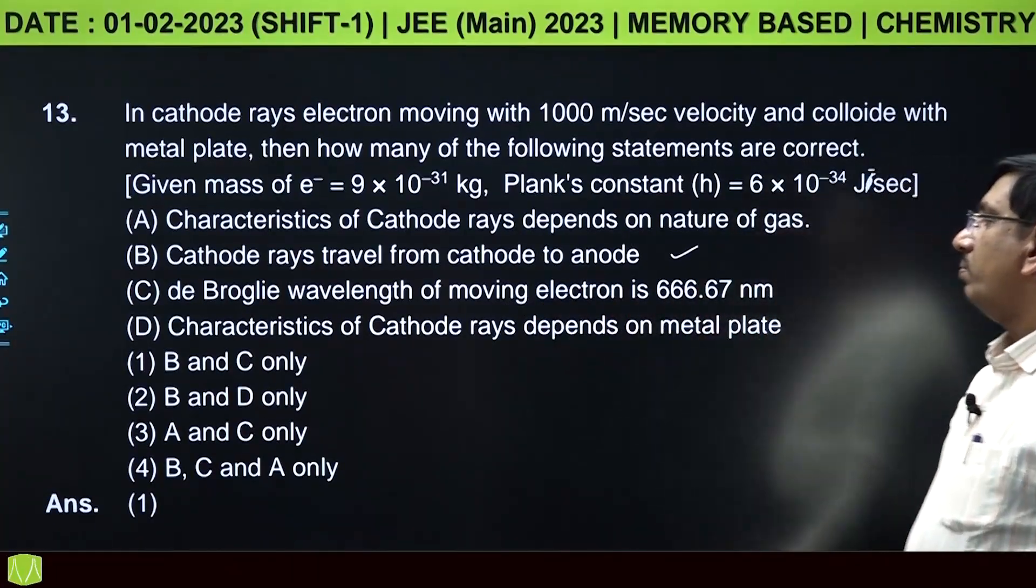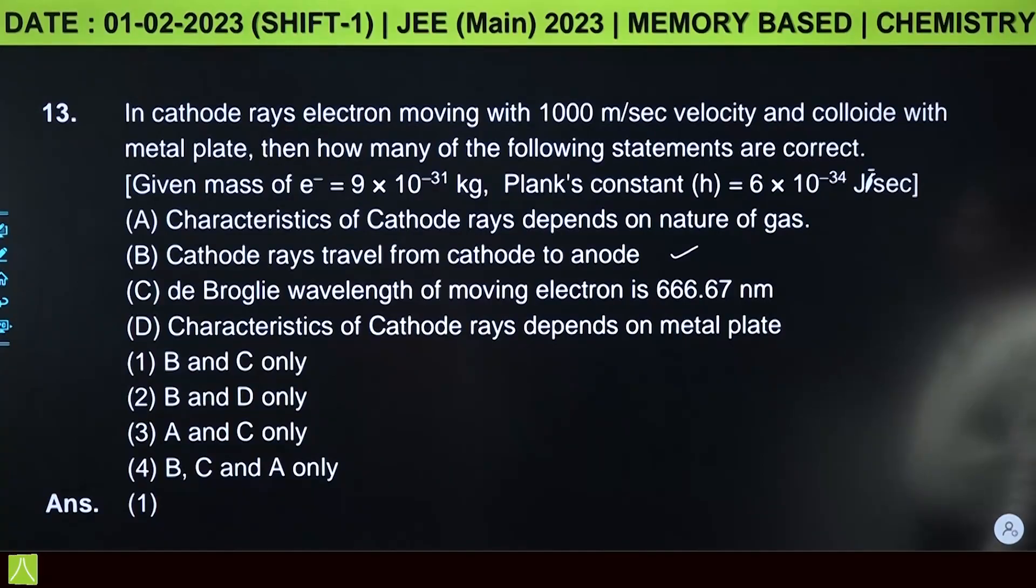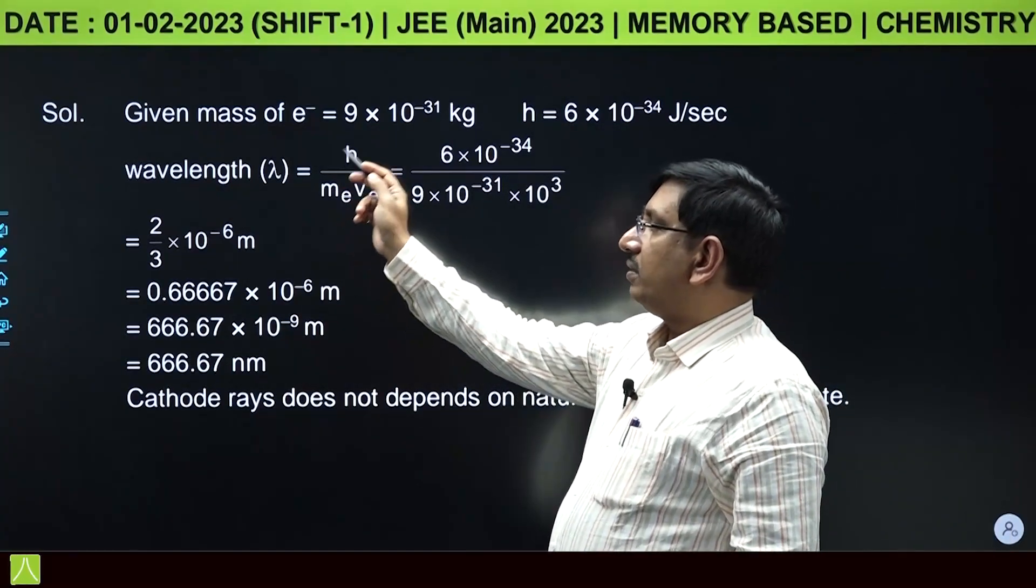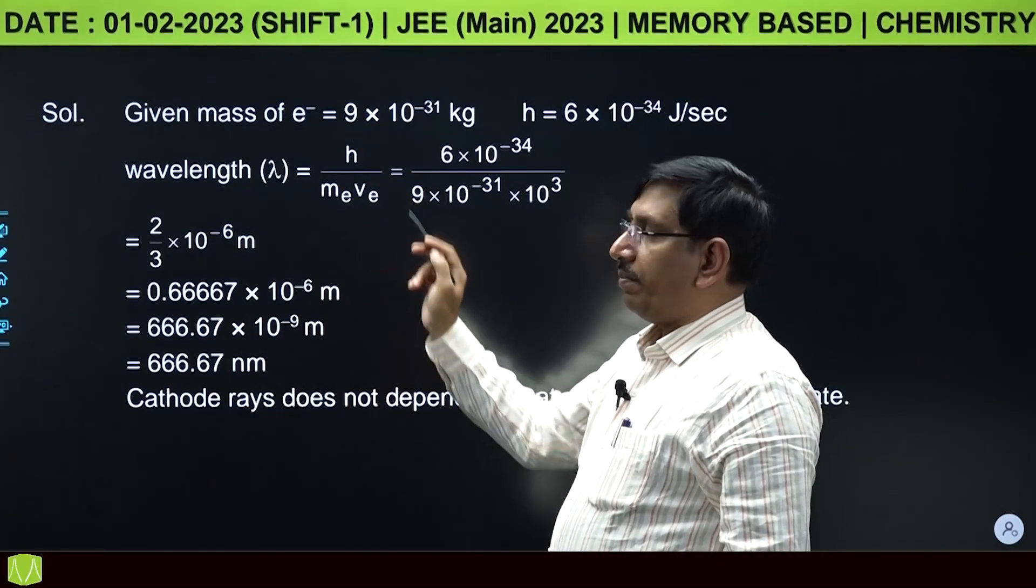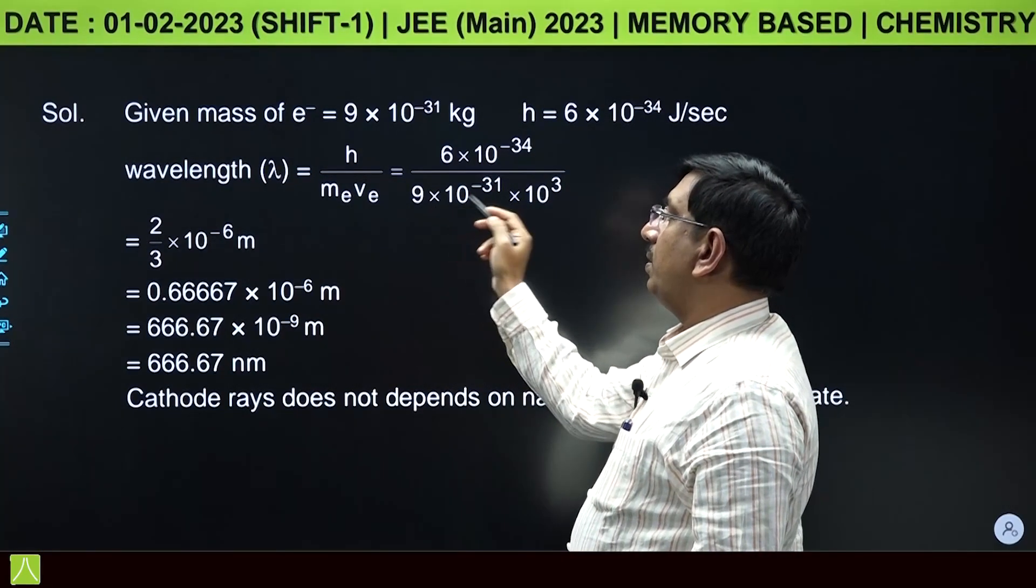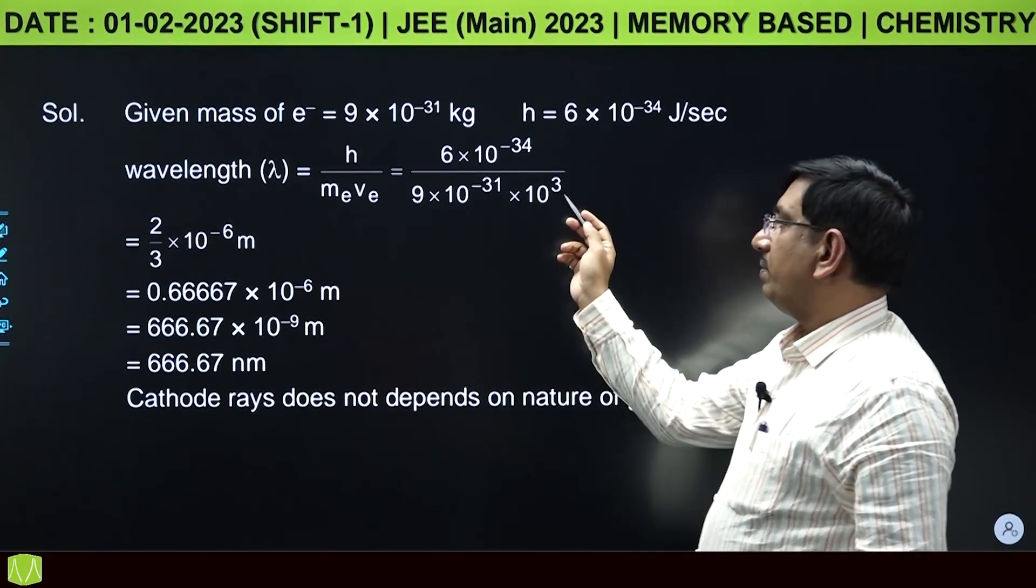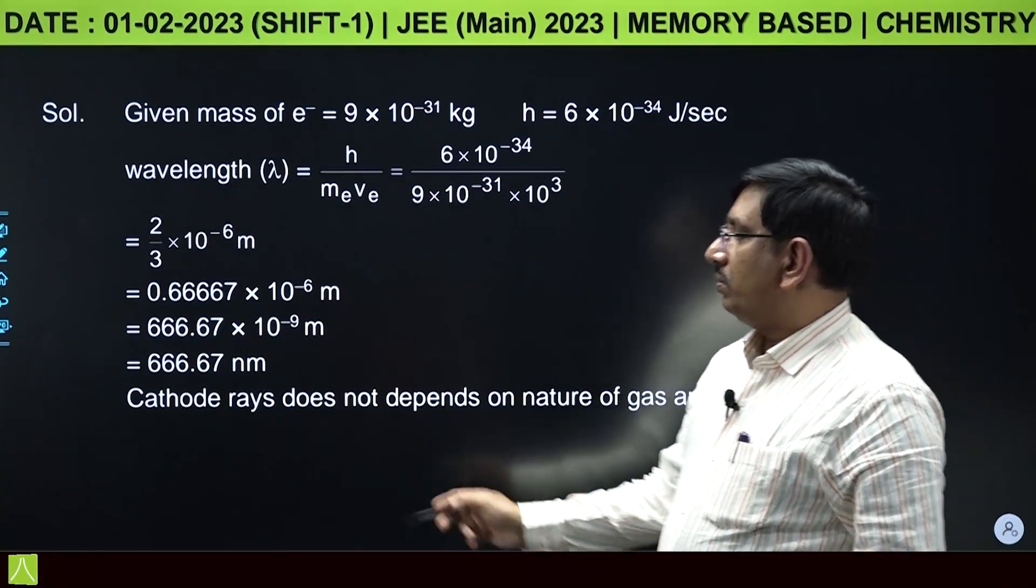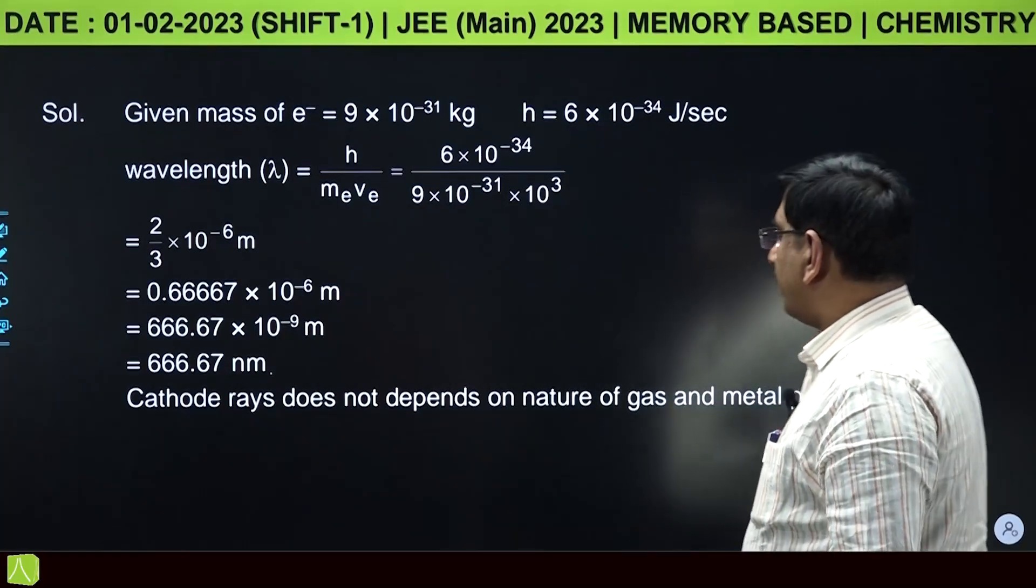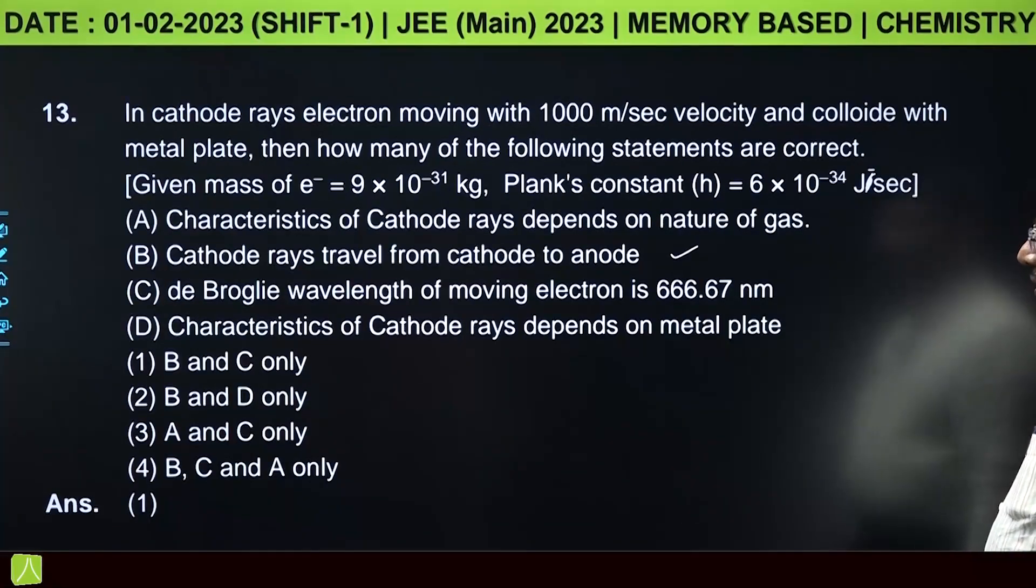Statement 3: De Broglie wavelength of moving electron is 36.67 nanometers. Let's check: λ = h/(m×v) = (6 × 10-34)/(9 × 10-31 × 103) = 36.67 nanometers. So the given statement is correct.